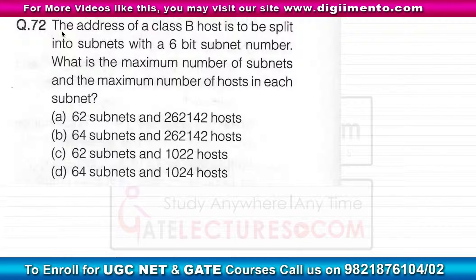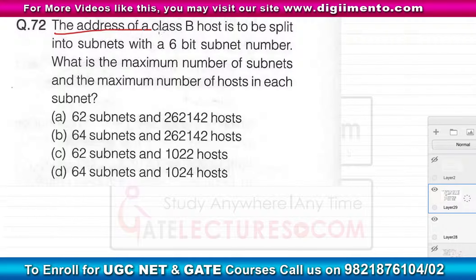In question number 72, the address of a class B host is to be split into subnets with a 6-bit subnet number. What is the maximum number of subnets and the maximum number of hosts in each subnet?